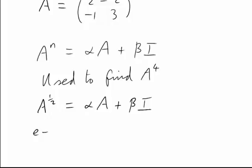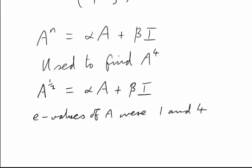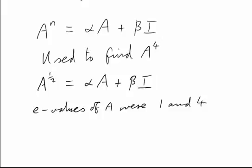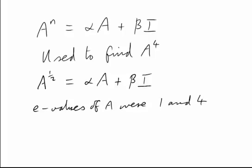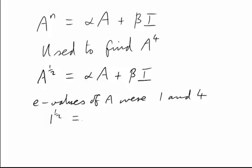We also know that the eigenvalues of A were 1 and 4. When we looked at A to the fourth, we commented that because of the Cayley-Hamilton theorem, the matrix A can be replaced with its eigenvalues in these results. So let's replace the matrix A in the equation A to the half equals alpha A plus beta I with the two eigenvalues, 1 and 4. We get 1 to the half is alpha times 1 plus beta, and 4 to the half equals alpha times 4 plus beta.